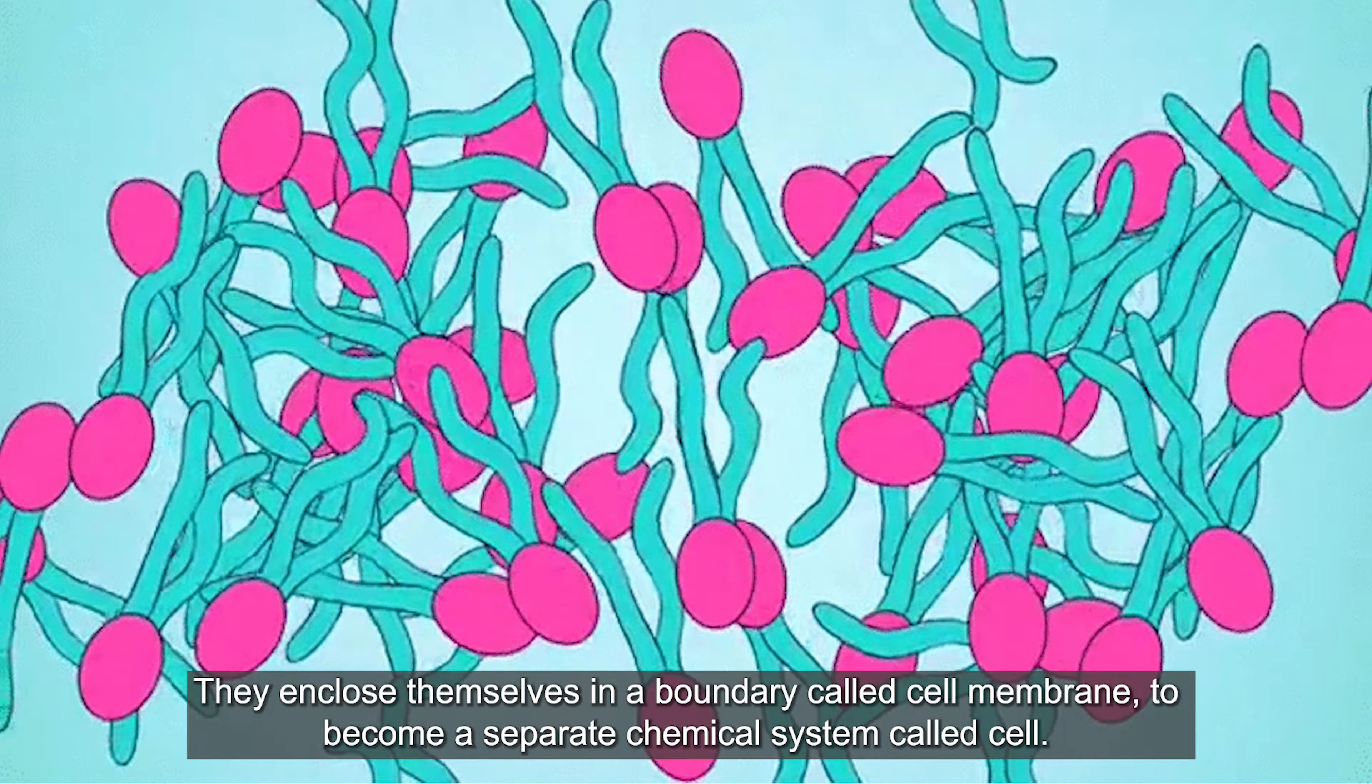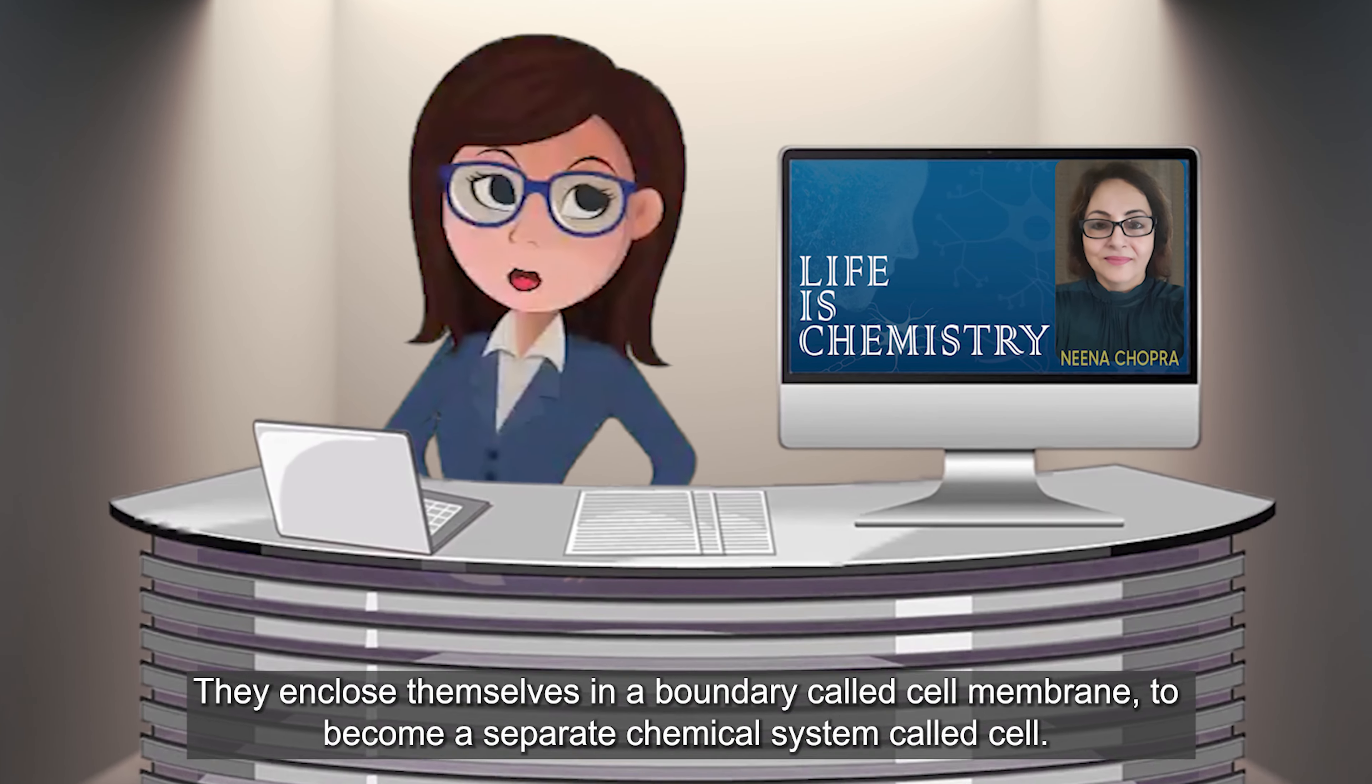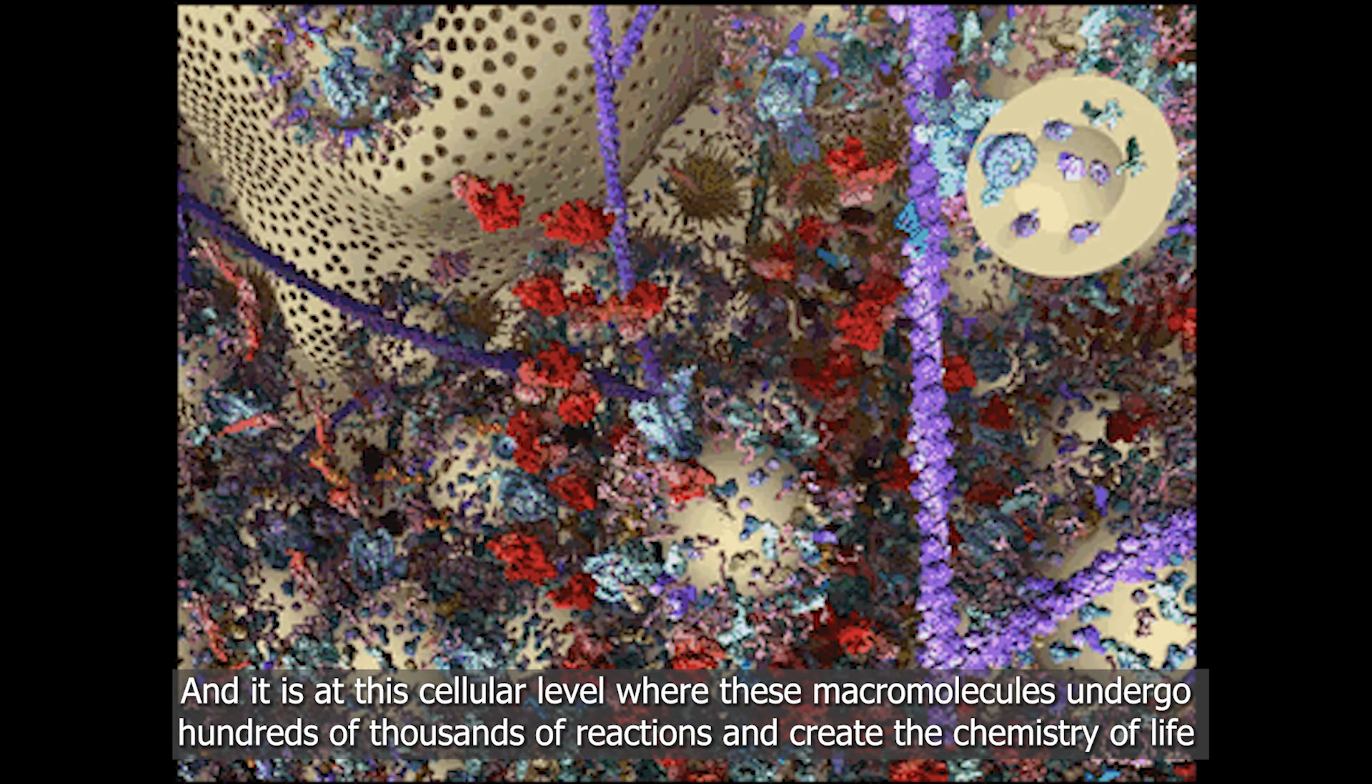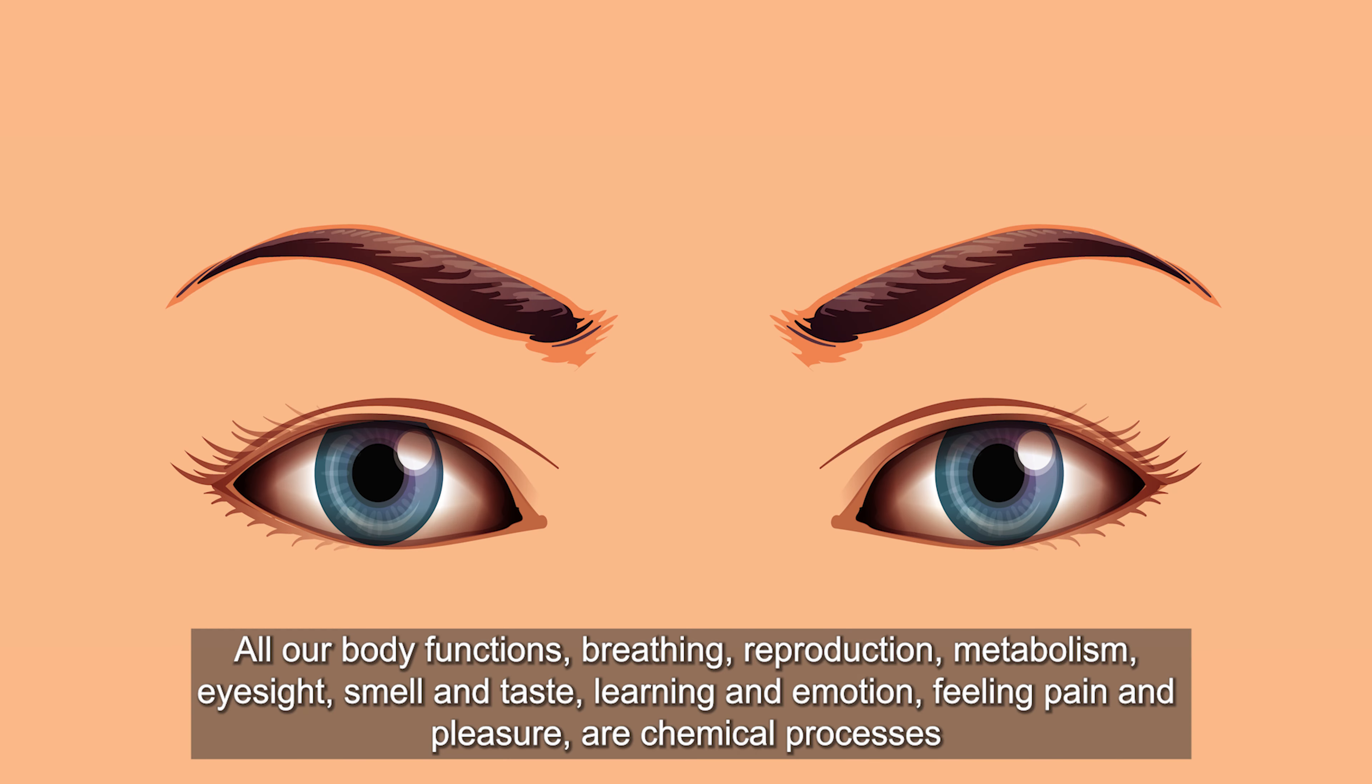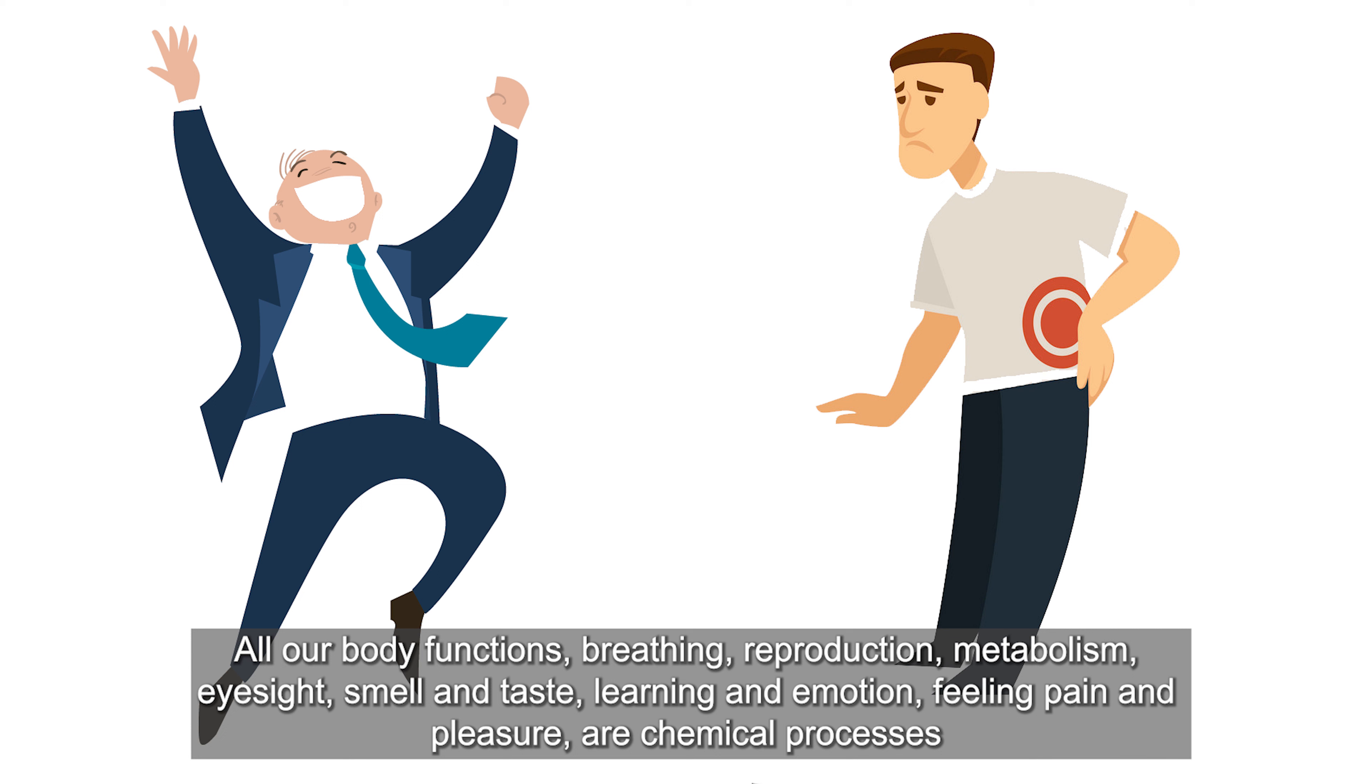These molecules get assembled and organize themselves into very large molecules of complex shapes and sizes and enclose themselves with a boundary called cell membrane to become a separate chemical system called cell. And it is at this cellular level where the chemistry of life takes place according to the physical and chemical laws of nature.